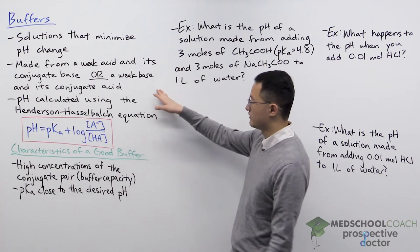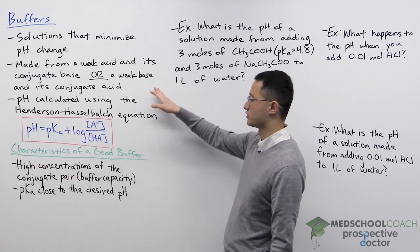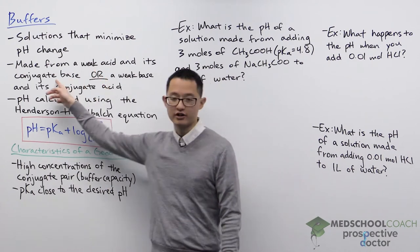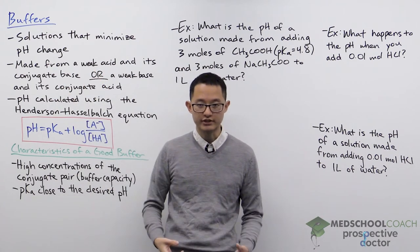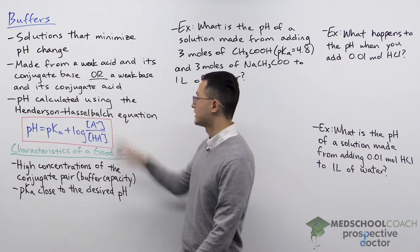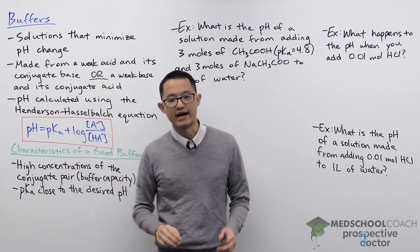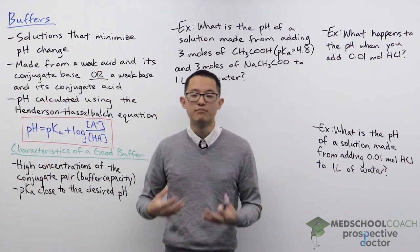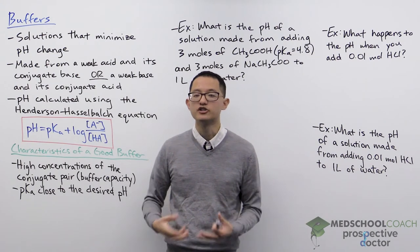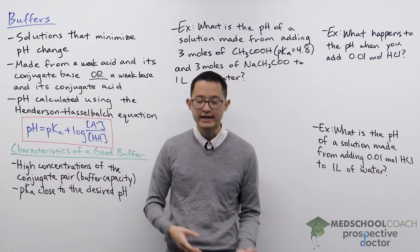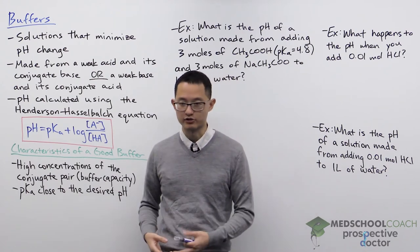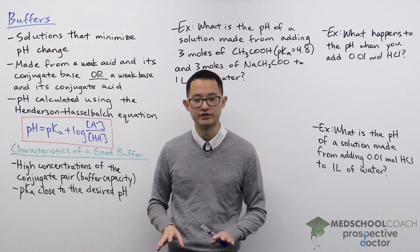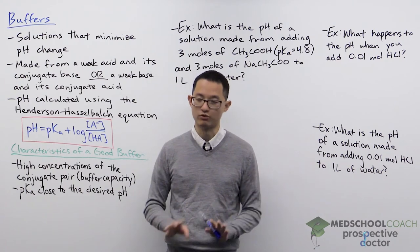The next thing we want to know is how do you make a buffer solution? There are two different ways. You can either take a weak acid and its conjugate base and add it to solution, or you can take a weak base and its conjugate acid and add it to solution. So you can make a buffer by adding the conjugate pair of a weak acid or weak base in solution. Notably, you cannot make a buffer solution using strong acids or strong bases.